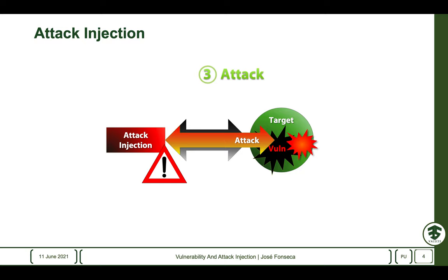Important metrics can be obtained by computing the percentage of attacks that were detected or prevented among all the attacks executed. Another outcome is the assurance that the vulnerabilities that were injected and successfully attacked are indeed real vulnerabilities.